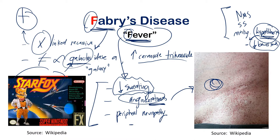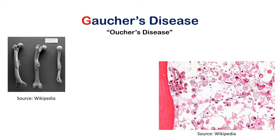So Fabry's disease has peripheral neuropathy — remember F for fever, which is shutting down your peripheral nervous system's sensory function at the distal extremities. Summary of Fabry's: decreased sweating (space/Star Fox), peripheral neuropathy (F for fever), and angiokeratomas. Let's move on to the next one.